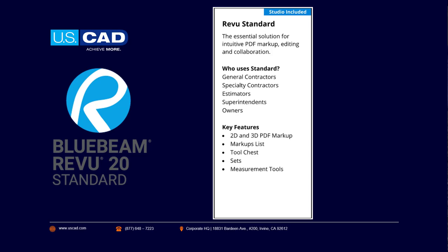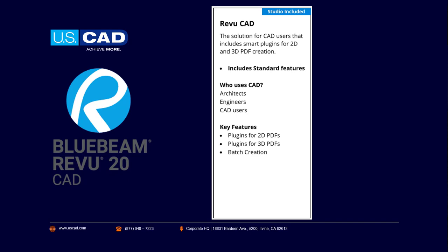Within Standard, this is your primary tool for redlining, your 2D markups, adding in your text, arrows, and clouds, having access to the tool chest for your library of tools to repurpose between PDFs, and also measuring the PDF itself — so what is the length and area of certain regions found within it. Standard also includes the Bluebeam Studio environment, which gives you access to Studio Projects and Sessions.